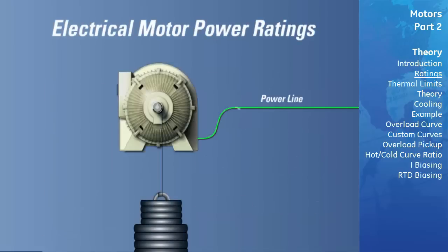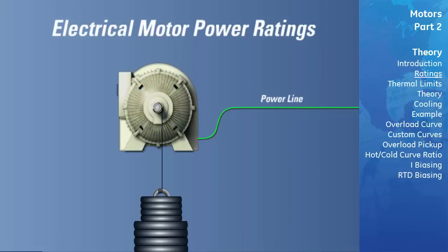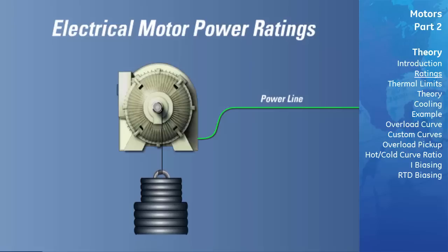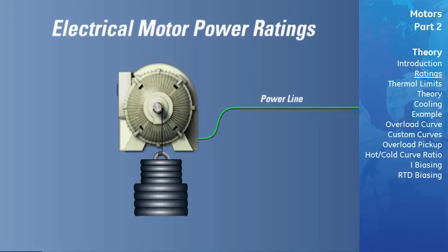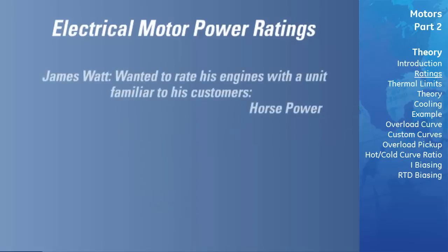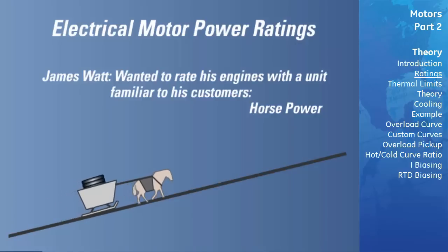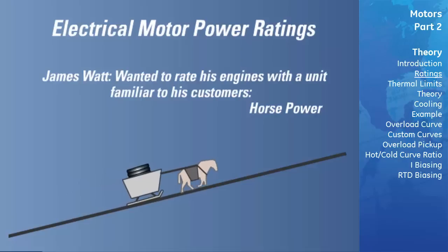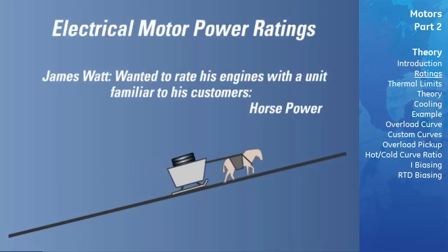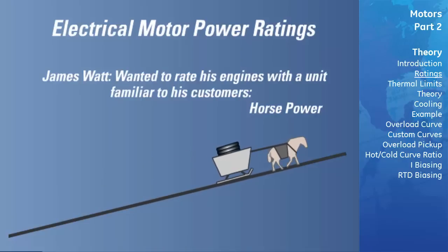The function of a motor is to perform work, so one of a motor's ratings should be its ability or potential to perform work. Work is equal to the applied force multiplied by the distance it has been applied. Power is a measure of the rate at which work is being done. James Watt wanted to rate steam engines in a unit of power his customers could relate to, and since the traditional source of power had been the horse, he created the horsepower unit.